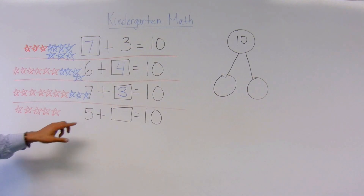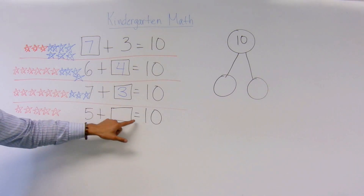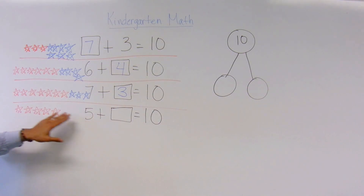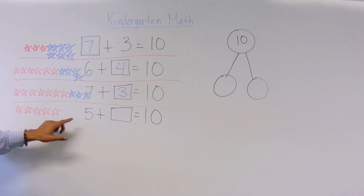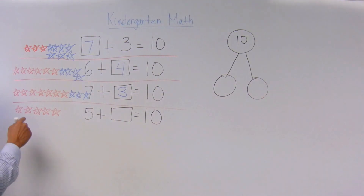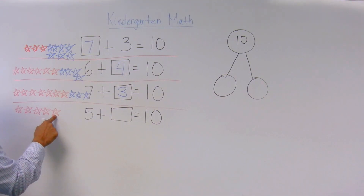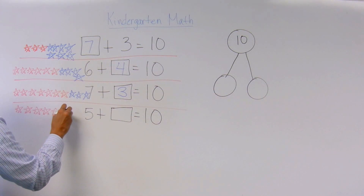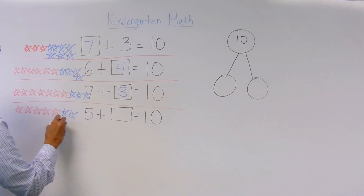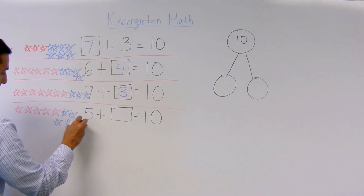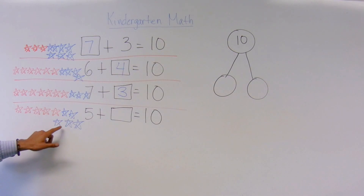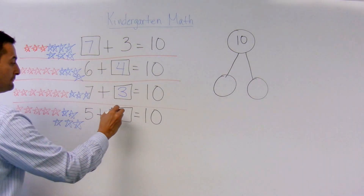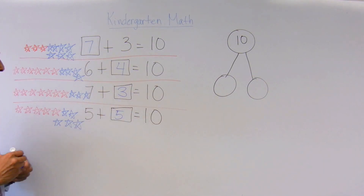And the last example is 5 plus something equals 10. I drew 5 stars: 1, 2, 3, 4, 5. And I'm going to count up: 6, 7, 8, 9, and 10. How many blue stars do I have? 1, 2, 3, 4, 5. I've got 5 blue stars. That's one way.